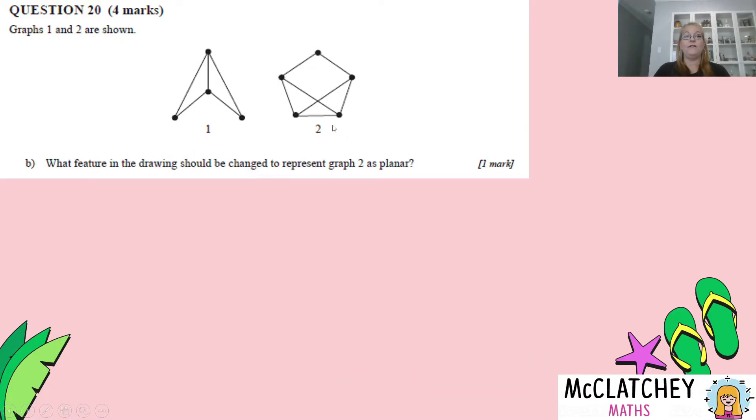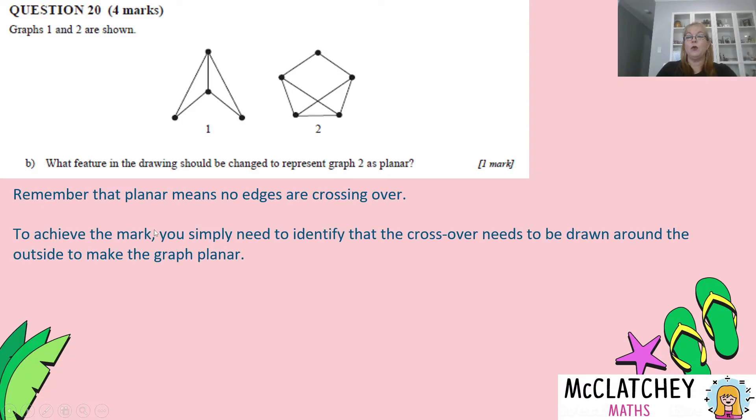Part B. What feature in the drawing should be changed to represent graph 2 as planar? So in particular, you need to remember what planar means. Planar means that the graph can be redrawn so that no lines cross over. At the moment, we've got this crisscross here. That's causing us a bit of a problem. To do this, we need to identify the crossover and say what feature needs to be changed. The feature that needs to be changed is that one part of this crossover needs to be redrawn. So you actually need to state that to get your mark. Recognising that this is the problem that makes it not planar at the moment. That's what needs to be redrawn.